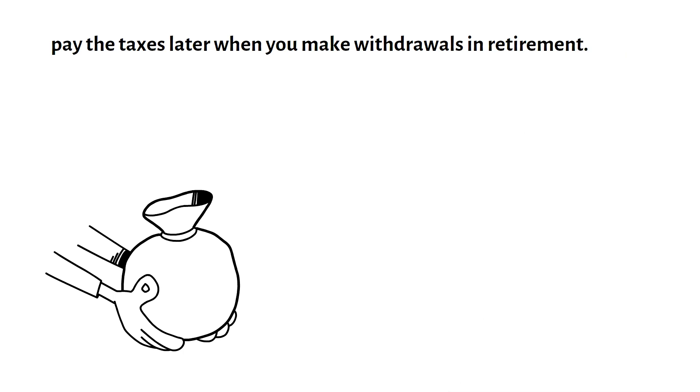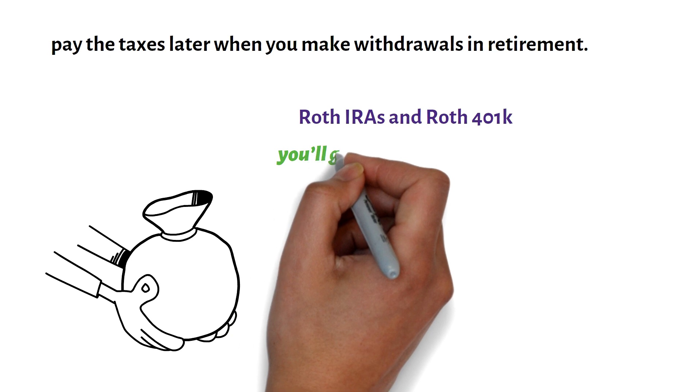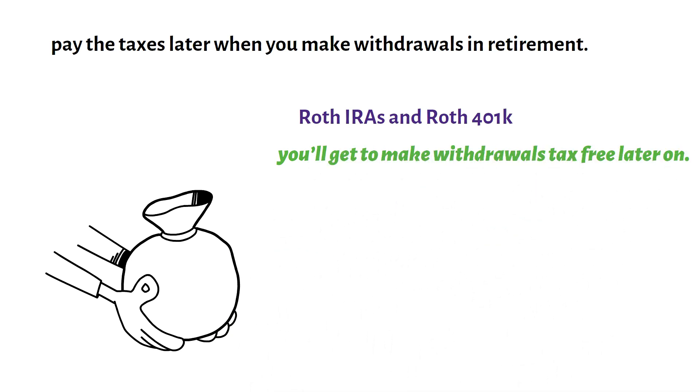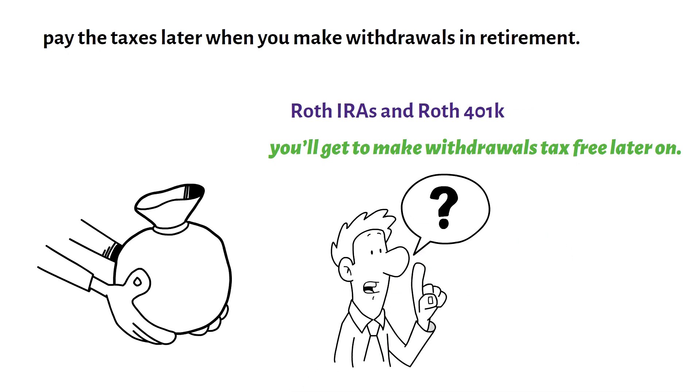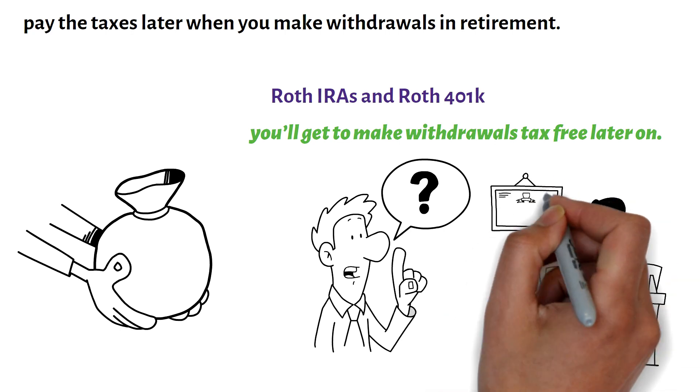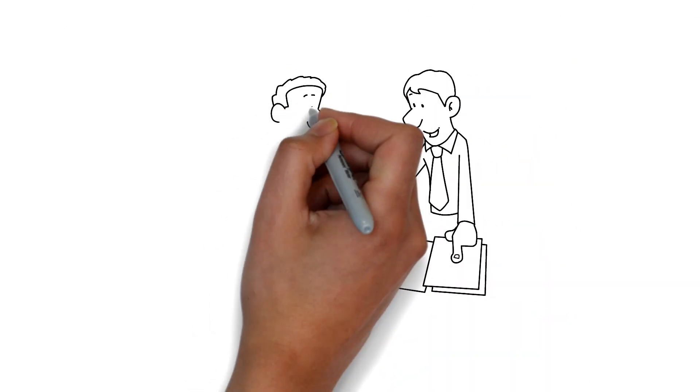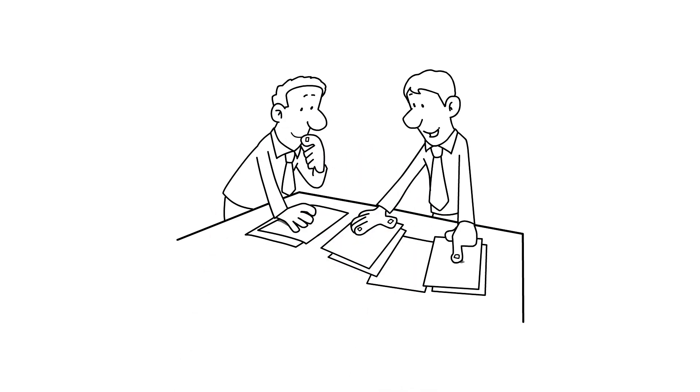Traditional retirement accounts let you invest money tax-free now and pay the taxes later when you make withdrawals in retirement. Meanwhile, Roth IRAs and Roth 401k plans tax you now, but you'll get to make withdrawals tax-free later on. Deciding which type of account is best for your situation can be a complex decision, so it's important to discuss your options with a financial advisor.